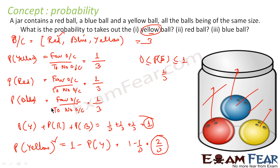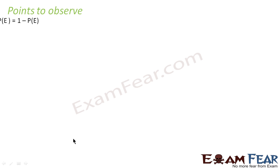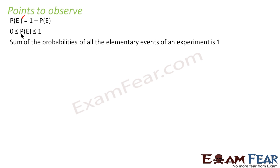If you want to find the probability of not something, it becomes one minus the probability of that thing. So probability of not E — written as P(E') — is one minus P(E). Also, we observe that any probability is greater than or equal to zero and less than or equal to one, and the sum of all probabilities equals one.